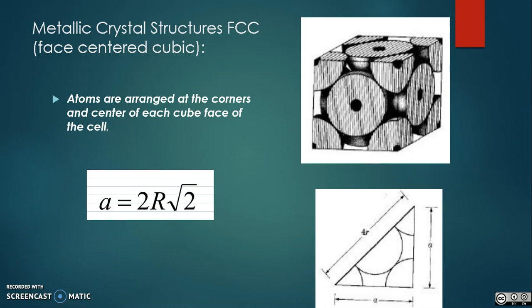The face-centered cubic structure has atoms located at each of the corners and centers of all the cubic faces. Each of the corner atoms is the corner of another cube, so the corner atoms are shared among eight unit cells. Additionally, each of its six face-centered atoms is shared with an adjacent atom. Since 12 of its atoms are shared, it is said to have a coordination number of 12.